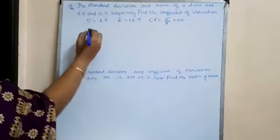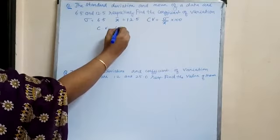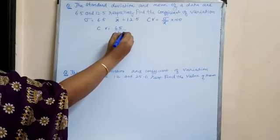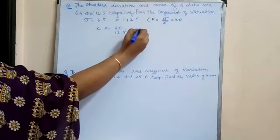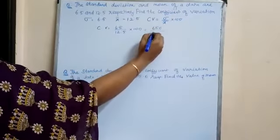So CV is equal to 6.5 by 12.5 into 100. When you multiply this, 650 by 12.5.